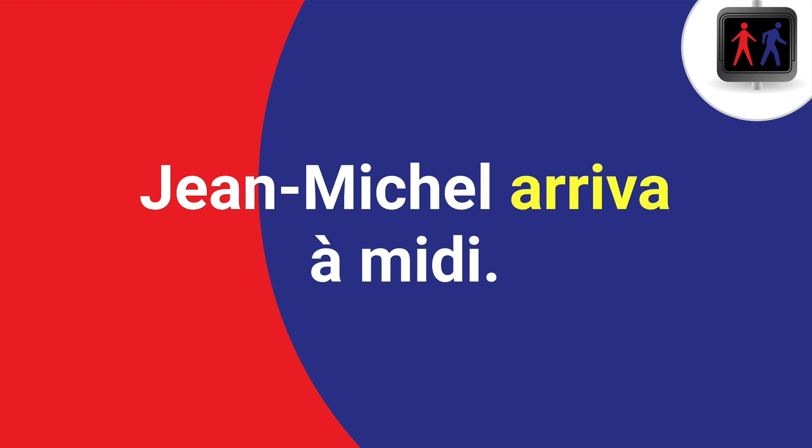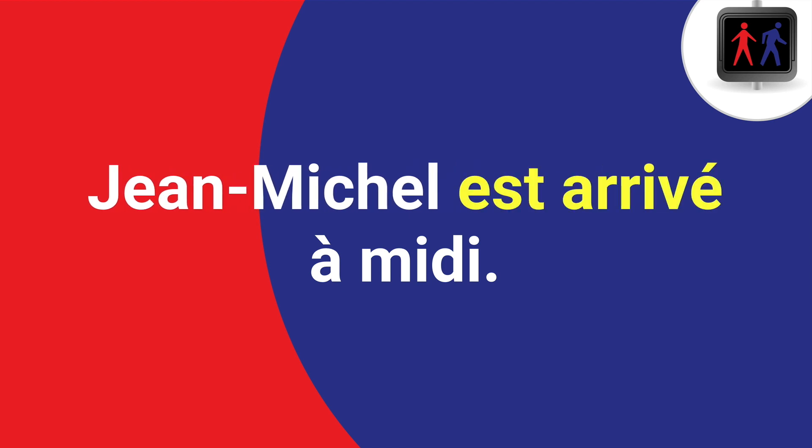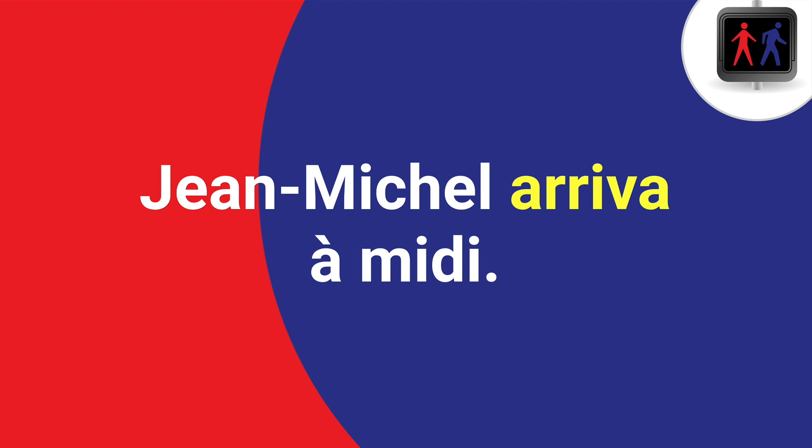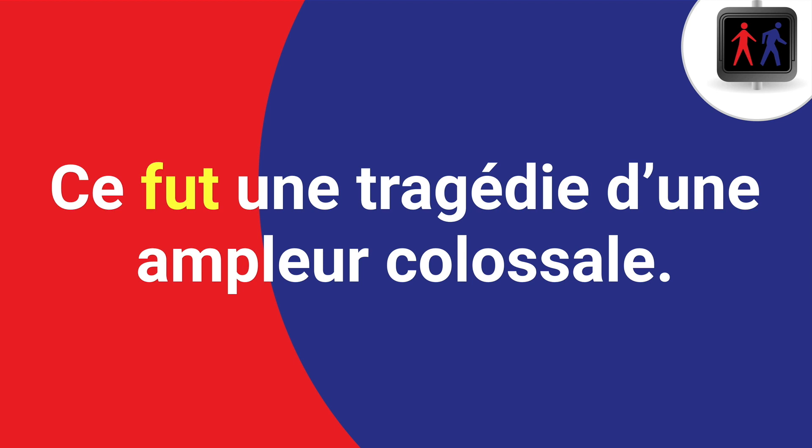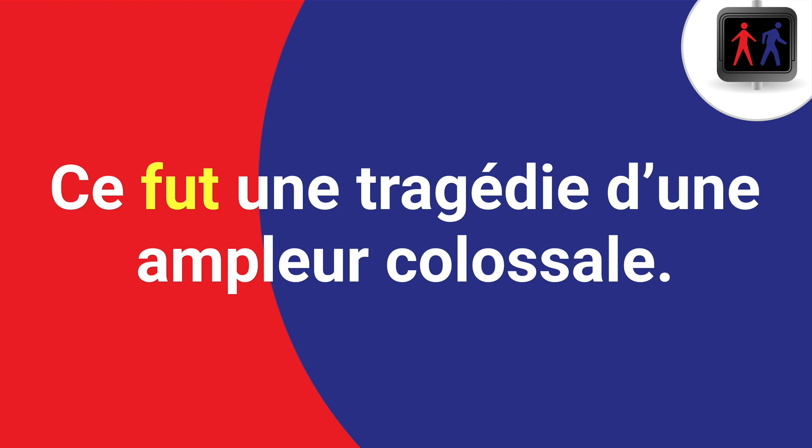Another example: Jean-Michel arriva à midi — Jean-Michel arrived at noon. Compare that with Jean-Michel est arrivé à midi, the perfect tense with the same meaning. Reading arriva in a novel, you'll now recognise it as the past historic. One more, perhaps more literary: Ce fut une tragédie d'une ampleur colossale — it was a tragedy of a colossal scale. Ce fut uses the past historic of être, giving a higher register.